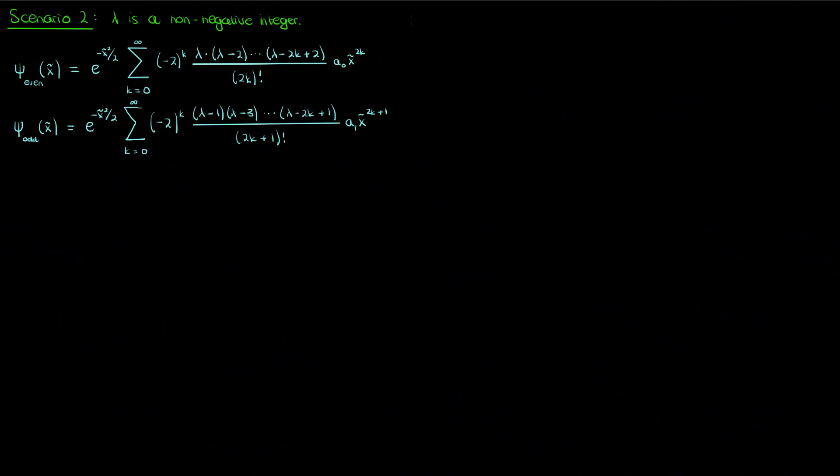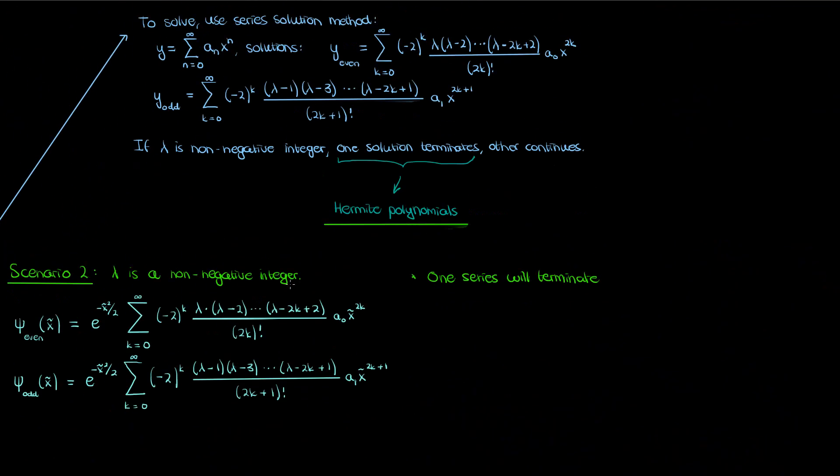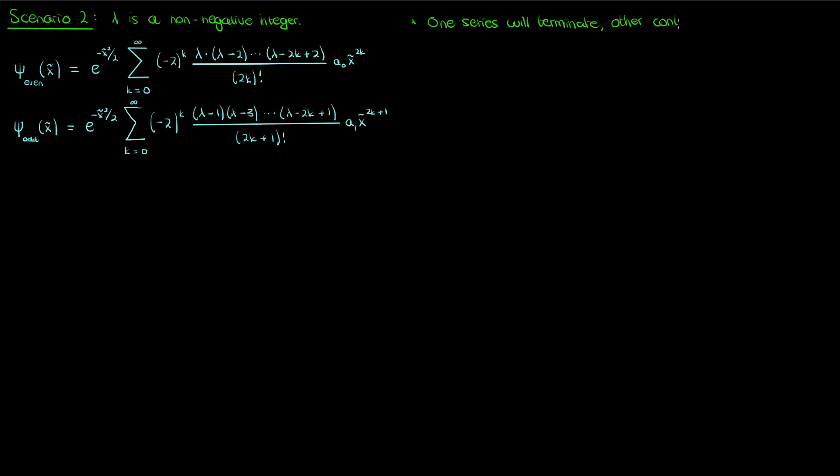And this takes us to scenario 2 where λ is a non-negative integer. Let's copy paste the two solutions for ψ in this setting. Now when λ is a non-negative integer, one of these series will terminate and give you the Hermite polynomials as we mentioned earlier in the video.